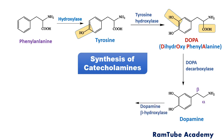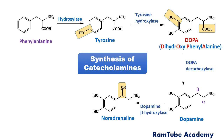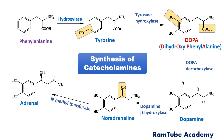Then dopamine, in the presence of the enzyme dopamine beta-hydroxylase, forms noradrenaline, and this happens in the adrenergic neurons. During this reaction, a hydroxyl group is added at the beta carbon. Hydroxylases are enzymes useful for incorporating a hydroxyl group into the substrate. Finally, noradrenaline in the presence of the enzyme N-methyltransferase forms adrenaline. During this reaction, a methyl group is transferred onto the nitrogen — hence the name N-methyltransferase — and this reaction occurs in the adrenal medulla gland.